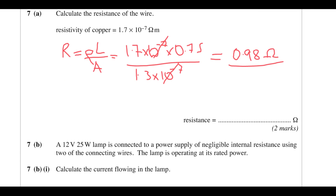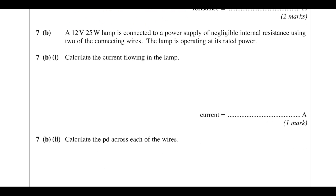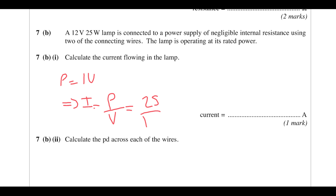Keep that stored in the calculator. A 12 volt, 25 watt lamp is connected to a power supply with no internal resistance, using two of these wires, and the lamp is operating at its rated power. Calculate the current flowing in the lamp using P = IV: current equals power divided by potential difference — 25 divided by 12 — which is 2.1 amps.